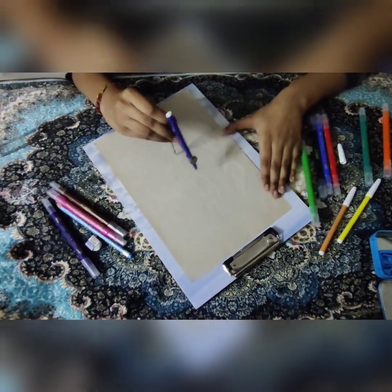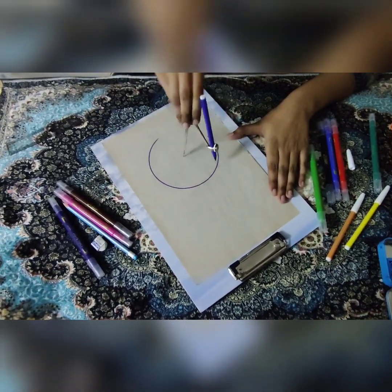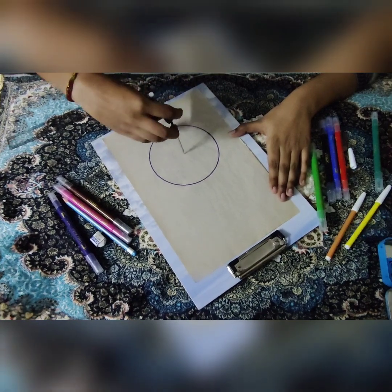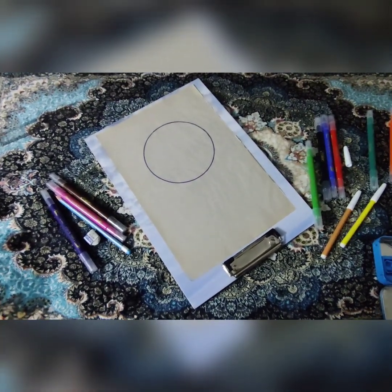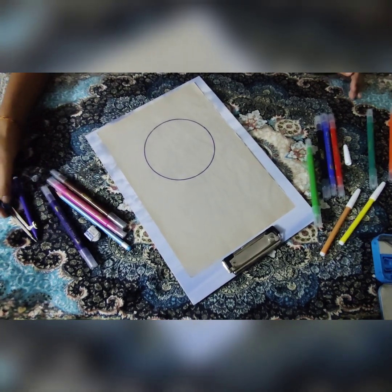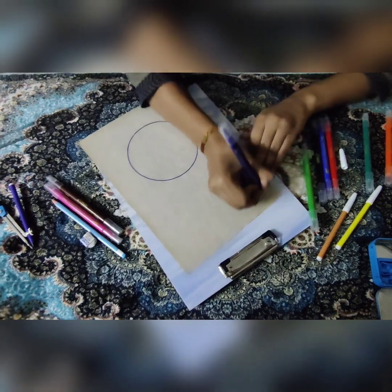Let's start by drawing a circle. So I have drawn my circle. Now the purple outline of my circle, that is called the circumference.